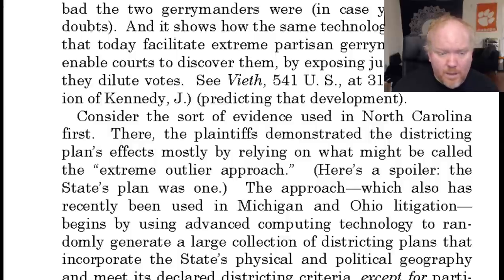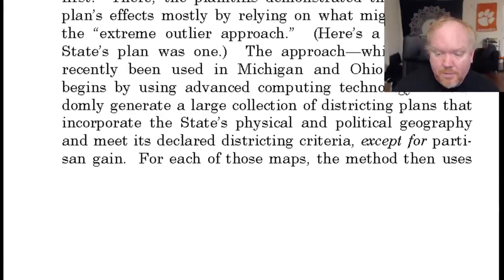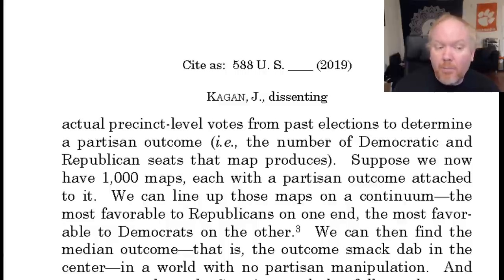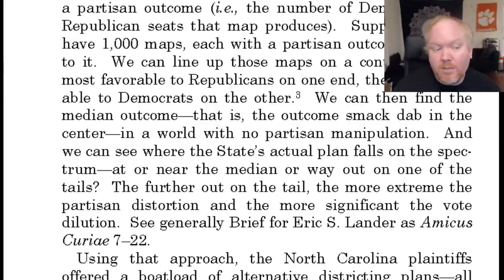Consider the evidence used in North Carolina. The plaintiffs demonstrated the districting plan's effects by relying on what might be called the extreme outlier approach — and spoiler: the state's plan was one. The approach begins by using advanced computing technology to randomly generate a large collection of districting plans that incorporate the state's physical and political geography and meet its declared districting criteria, except for partisan gain. For each of those maps, the method then uses actual precinct-level votes from past elections to determine the partisan outcome — the number of Democratic and Republican seats each map produces.